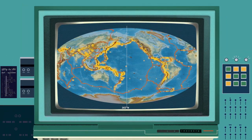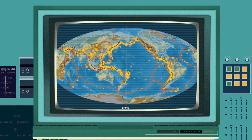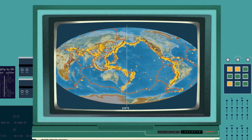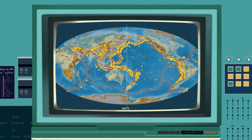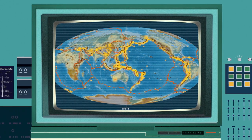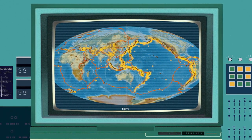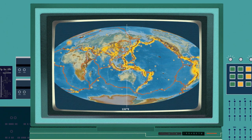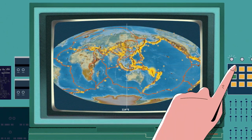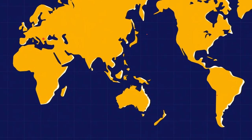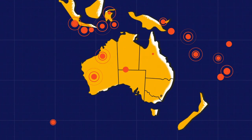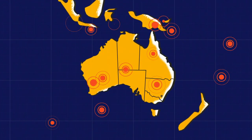Earthquakes also help to map out the tectonic plates that make up the Earth's crust. Earthquakes most frequently occur at plate boundaries, and by plotting the location of earthquakes over the past month, the outline of the plates becomes clear. However, not all earthquakes happen at plate boundaries — sometimes there are intraplate earthquakes that occur because of stresses in rocks being released.